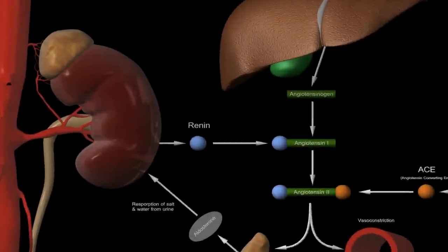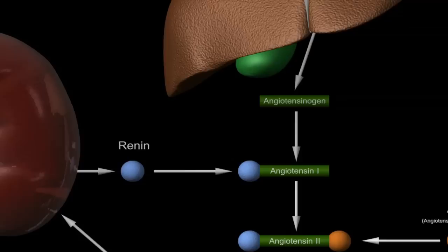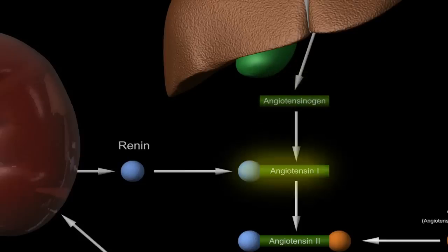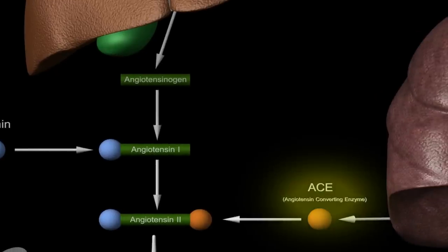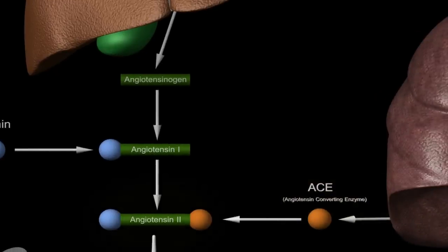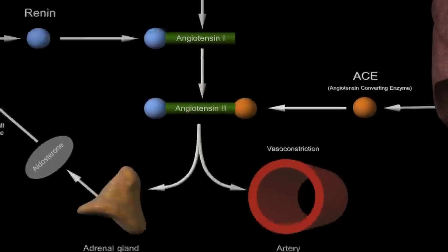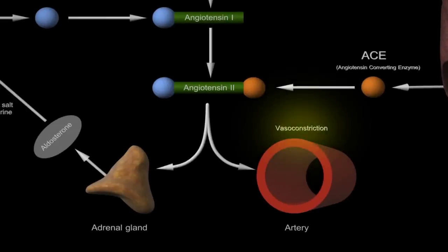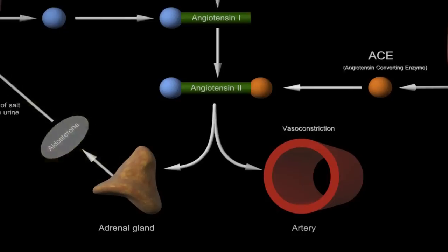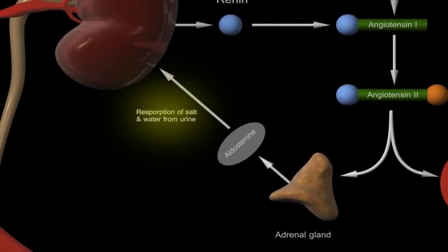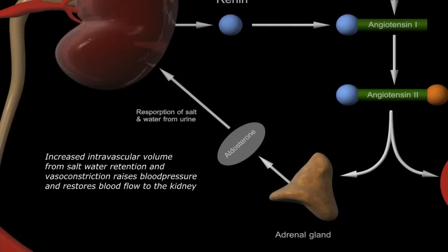To summarize: decreased blood flow to the kidney causes the kidney to secrete the enzyme renin. Renin acts on a hormone precursor from the liver called angiotensinogen, converting it to angiotensin 1. A second enzyme produced in the lungs, called ACE or angiotensin-converting enzyme, acts on angiotensin 1, converting it to angiotensin 2, the active form of the hormone. Angiotensin 2 then acts on both the arteries and adrenal glands, causing constriction of peripheral blood vessels and secretion of aldosterone. Aldosterone causes the kidneys to absorb salt and water from the urine, increasing blood pressure and restoring blood flow to the kidney.